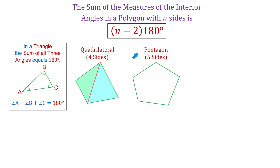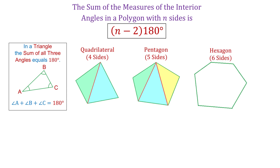A pentagon has five sides and from a vertex we can draw two diagonals, so the pentagon is divided into three triangles. A hexagon has six sides and from a vertex we can draw three diagonals, so the hexagon is divided into four triangles.